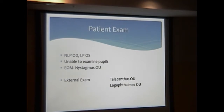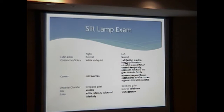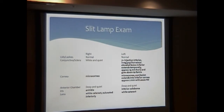On exam, our patient has no light perception in the right eye and only light perception in the left eye. We were unable to examine the pupils, and nystagmus was noted with the extraocular muscles, which is also a feature of the PAX6 mutation. On external exam, she had lagophthalmos in both eyes and telecanthus. Most notably on her slit lamp exam, she had 2-plus injection inferior with an irregular papillomatous elevated lesion inferior, extending temporally approximately 15 millimeters horizontally going down into the fornix. The lesion also encroached upon the cornea approximately 2 millimeters with associated neovascularization, and you can also note the associated congenital abnormalities such as the coloboma and the juvenile cataract.